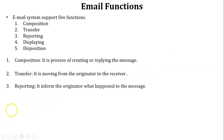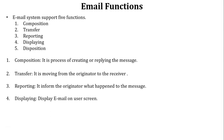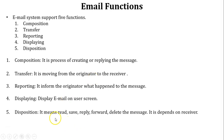The third function is reporting: it informs the sender what happened to the message. For example, when a message is delivered successfully, the mail server displays a 'message sent' notification. If the receiver's email address is not correct, the reporting function sends a mail failure notification to the sender. The fourth function is displaying: it displays all emails on the user's screen and shows the total number of new emails. The fifth function is disposition: in this function the user can read, save, move, reply, forward, or delete the message, depending on the receiver.